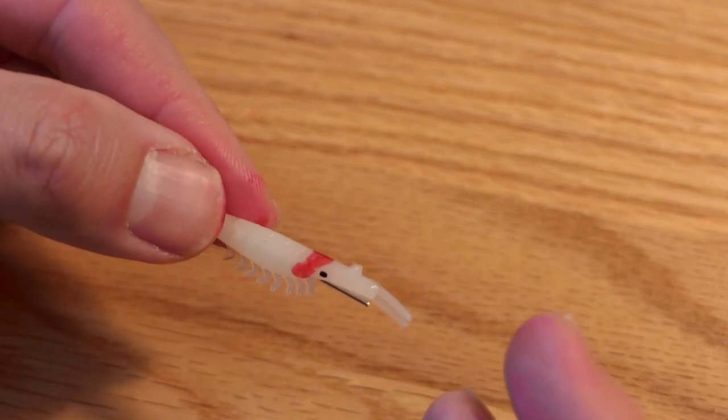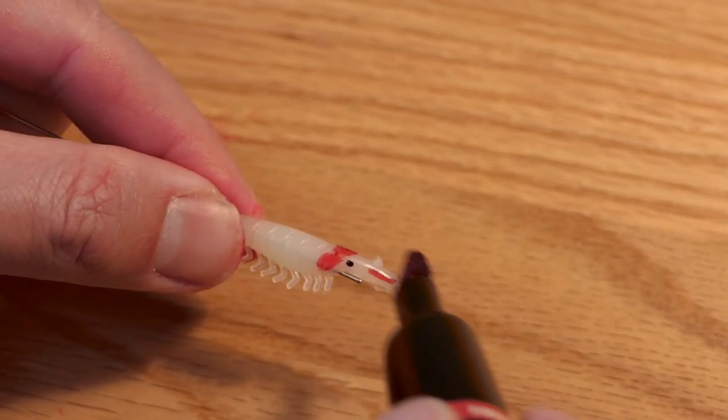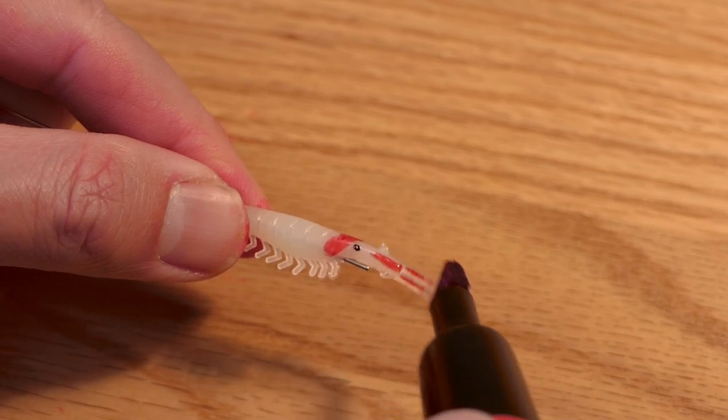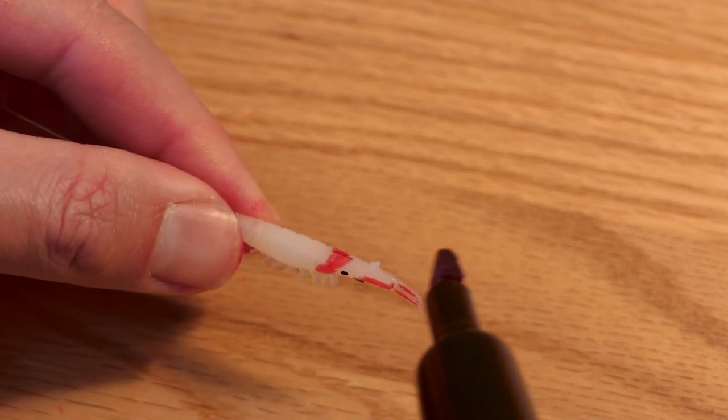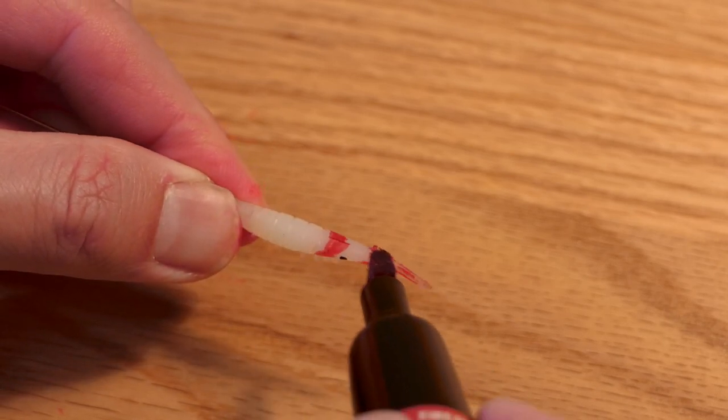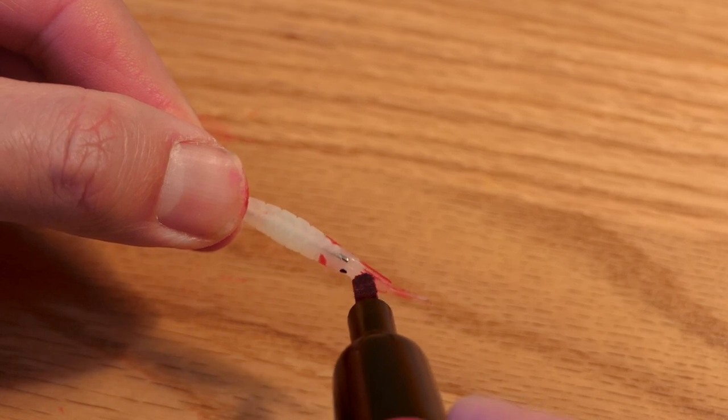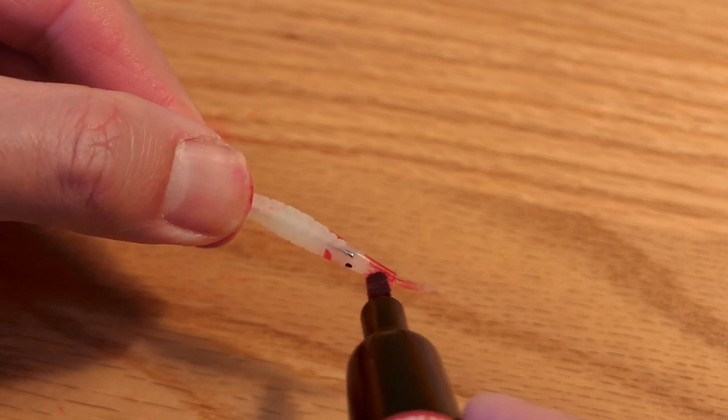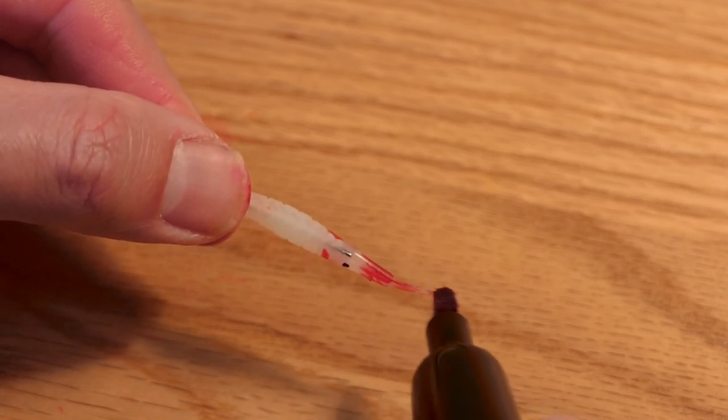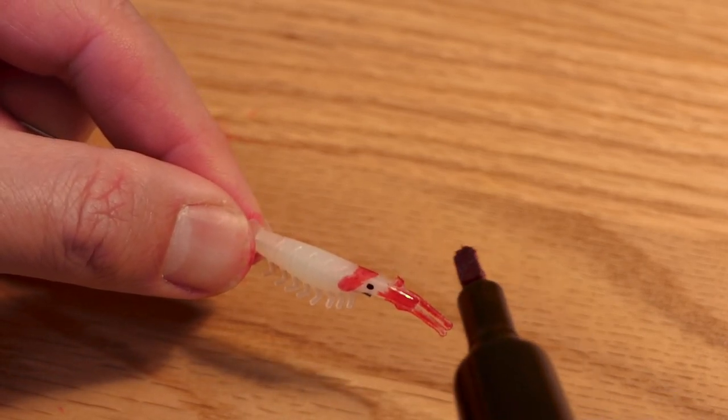There we go. And then we'll come forward and we'll do the nose of the shrimp. Give it that white band look around the eye. This red is very intense so it only takes one layer and it looks really good.